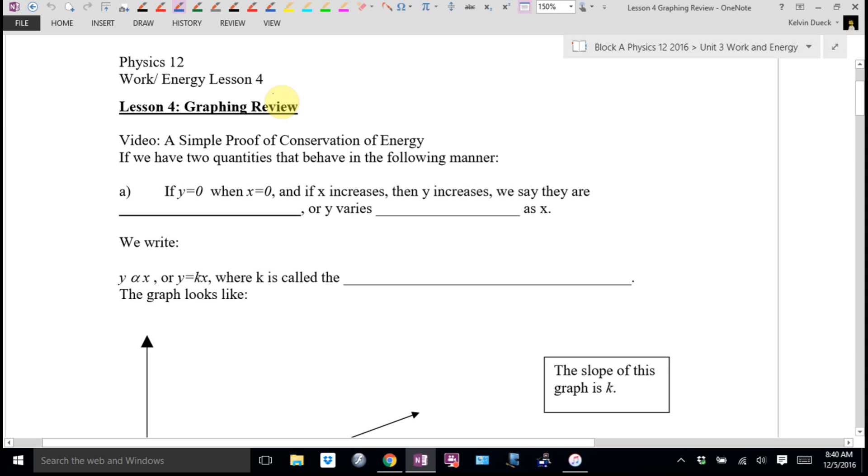I called this graphing review. Really this is how to interpret what the area under a graph means or what the slope of a graph means without having to memorize a bunch of different graphs. You can derive them.